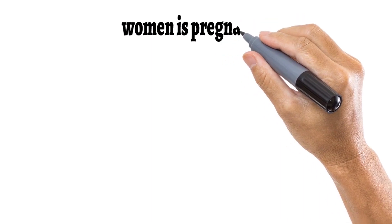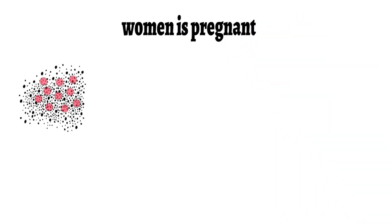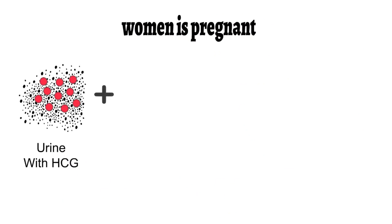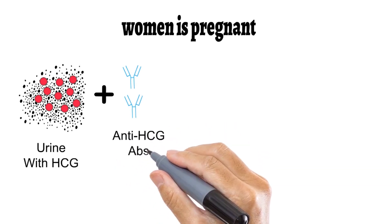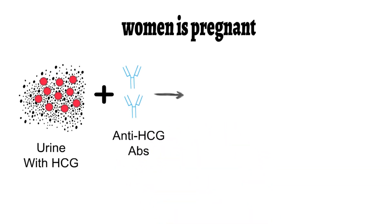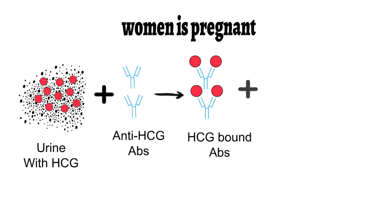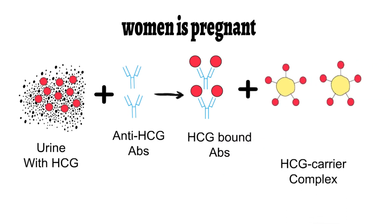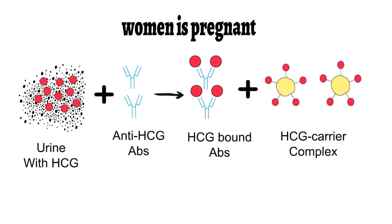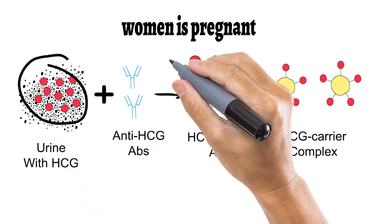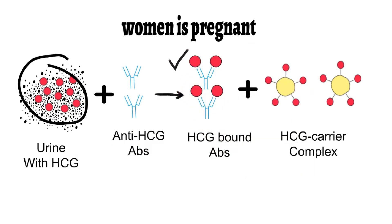Let us assume the woman is pregnant — meaning there will be HCG molecules in the urine sample. In the first step, the urine sample is incubated with anti-HCG antibodies. During incubation, the antibodies will bind to the HCG molecules. After this, the second reagent — the HCG-carrier complex — is added to the mixture.